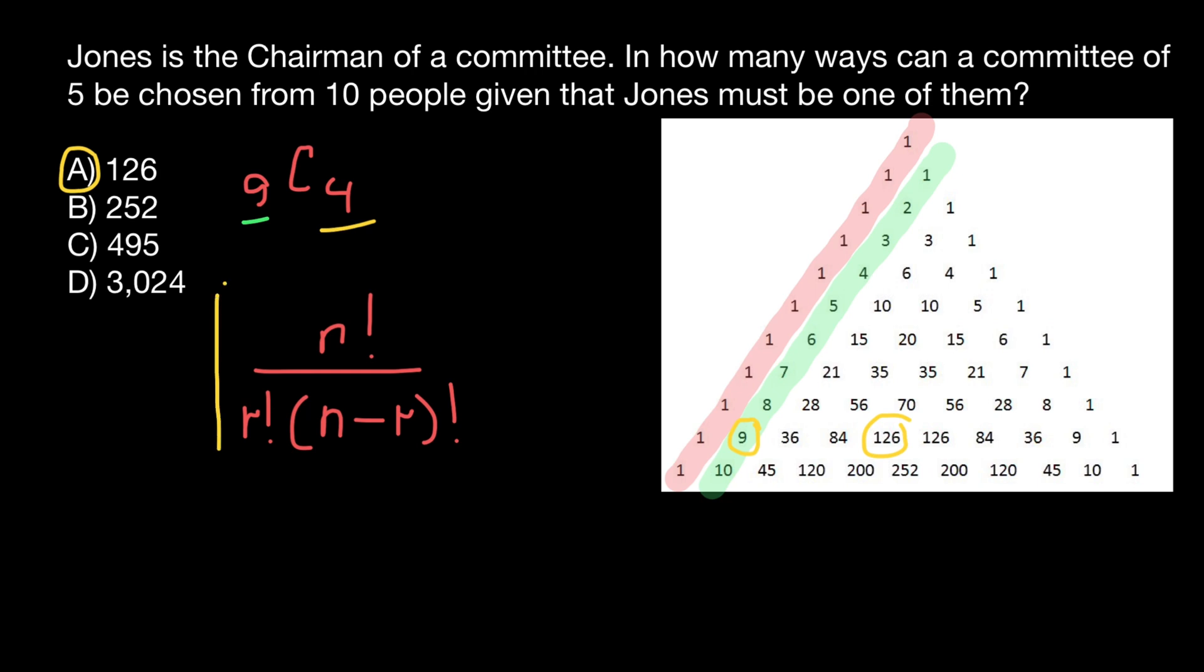In this formula, n stands for the total number, which is going to be nine. Again, not 10, but nine. So nine factorial divided by r, which is four factorial, and nine minus four factorial would give us nine factorial divided by four factorial times five factorial.